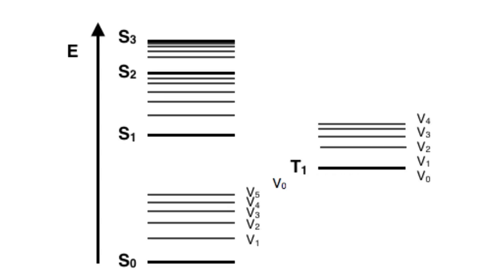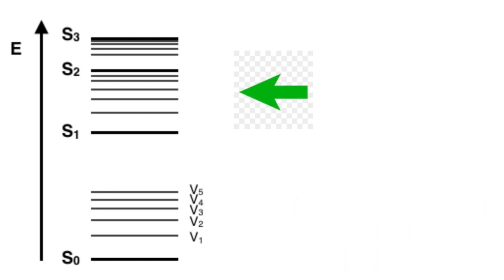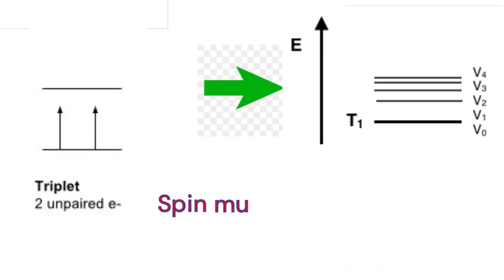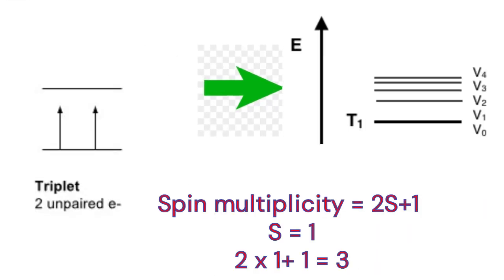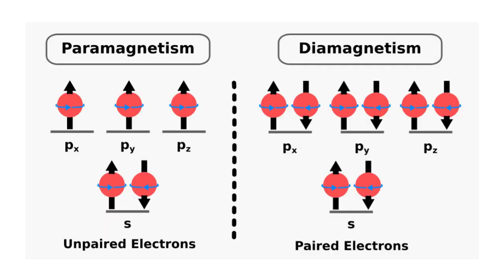The spin multiplicity of states is depicted along the x-axis. Singlet states, with a total spin number of 0, are typically on the left-hand side, while triplet states, with a total spin number of plus 1, are on the right. Singlet states result from paired spins yielding a diamagnetic molecule, while triplet states, with unpaired spins, render the molecule paramagnetic.